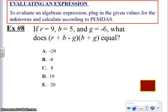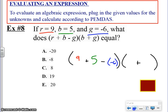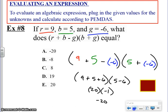Speaking of these expressions, evaluating an expression. In order to evaluate an algebraic expression, we're going to plug the given values for the unknowns and calculate them according to order of operations. Basically what we're saying is that we know how to substitute. Once we substitute, we still have to adhere to the order of operations. In this particular case, if R equals 9, B equals 5, and G equals negative 6, then it's asking what does R plus B minus G times the quantity B plus G equal? If I were to set this up and plug in, we know that R is 9 plus B, which is 5, minus G, which is negative 6, times the quantity B, which is still 5, plus G, which is still negative 6.